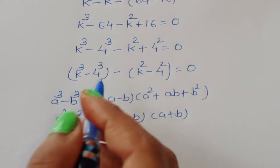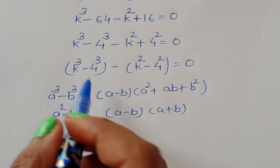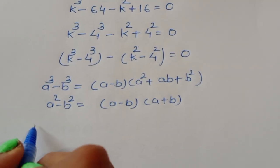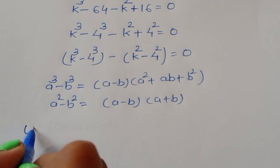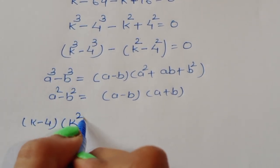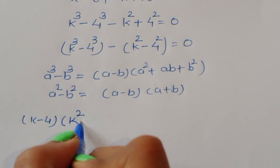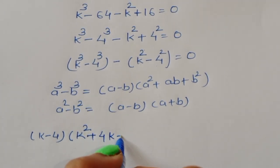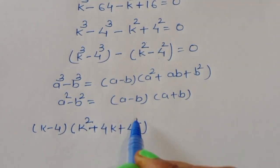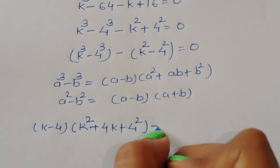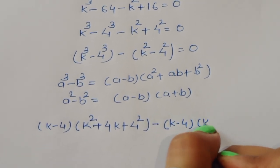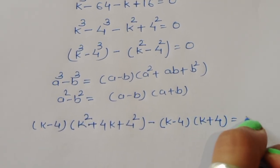For k cubed minus 4 cubed, where a equals k and b equals 4, we get (k minus 4)(k squared plus 4k plus 16). For k squared minus 4 squared, we get (k minus 4)(k plus 4). So the equation becomes (k minus 4)(k squared plus 4k plus 16) minus (k minus 4)(k plus 4) equals 0.